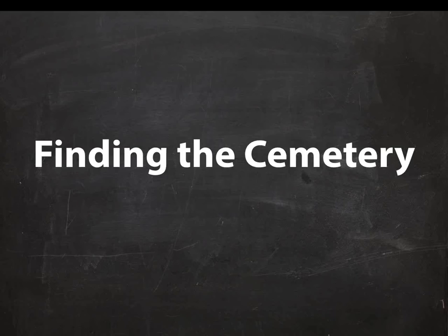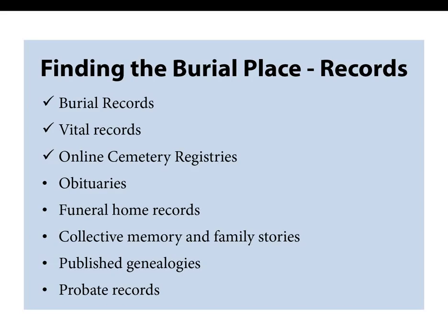Let's start off by finding the cemetery. We're going to discuss burial records, vital records — which often list the place of burial or give you a clue as to location — and some of the online cemetery registries such as Find a Grave and Billion Graves. There are also other records that are pretty obvious to most, but in case you're new to genealogy, an obituary or death notice in a newspaper is going to give you some clue as to where the person is buried.